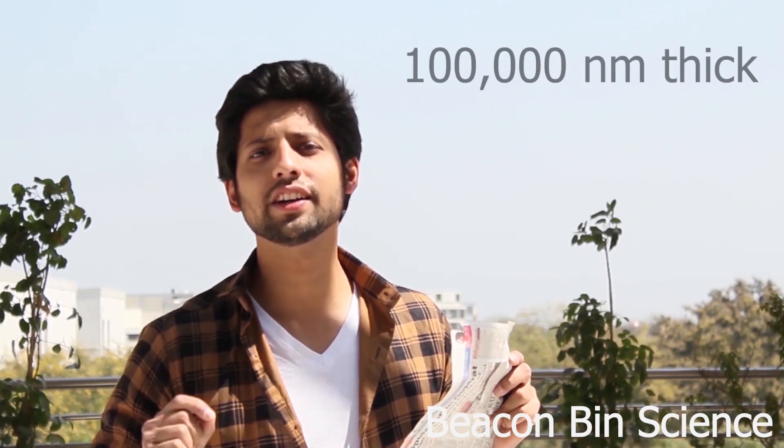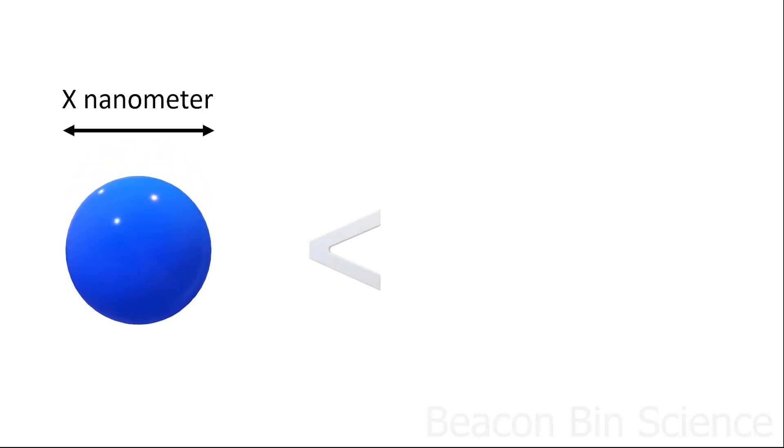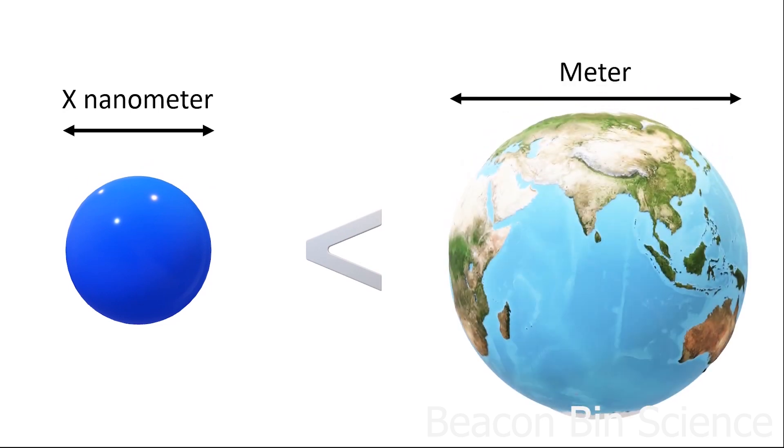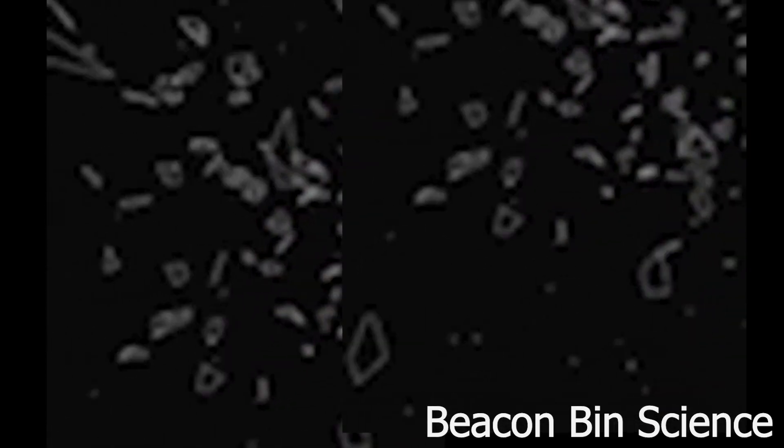The thickness of newspaper is roughly around 100,000 nanometers. Suppose if a marble were of nanometer size then one meter would be the size of the earth. Now you can imagine how small the nanometer is.